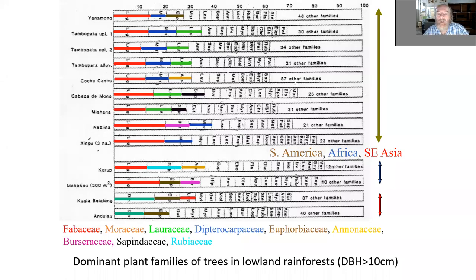These are forest plots from different forests across the world, where families are highlighted with different colors. You can see that there are typically about 70 families in each plot — these are typically one-hectare plots. But when we look at the three most dominant families highlighted, they are basically all Fabaceae, except for Southeast Asia, where Dipterocarpaceae — a locally endemic family — is dominating the forest. Even the second and third place repeat the same patterns, with Moraceae and Lauraceae.